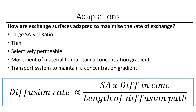Exchange surfaces are adapted in a number of ways. Blood capillaries have a large surface area to volume ratio and their lining is only one cell thick, minimising the diffusion pathway. We also have a transport system constantly moving substances to maintain concentration gradients — a good example is alveoli and gas exchange in the lungs. In an exam question asking how something is adapted to maximise diffusion rate, you must link the structural feature — for example, thin walls — with one of the factors in Fick's Law. That explains how the rate of diffusion is affected.